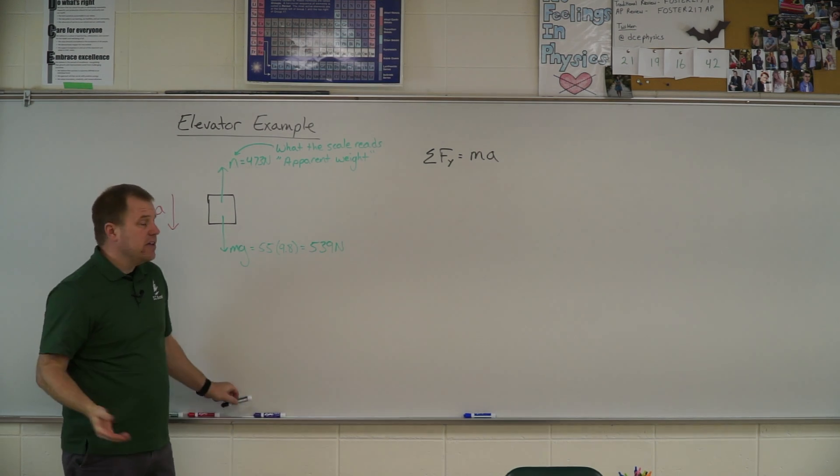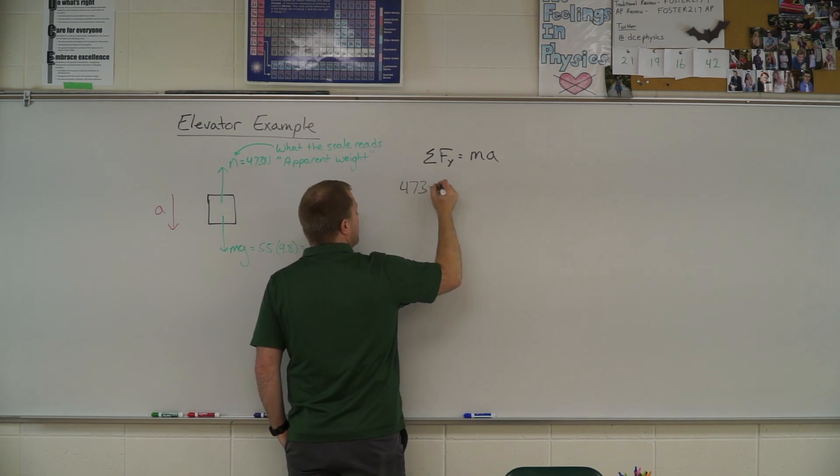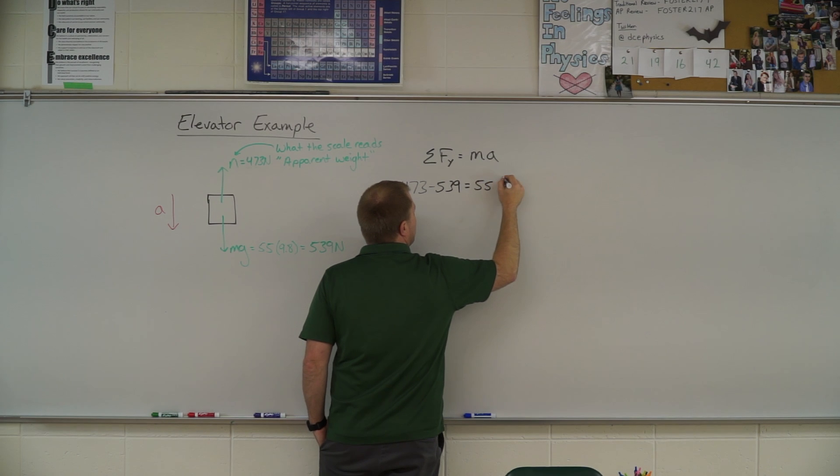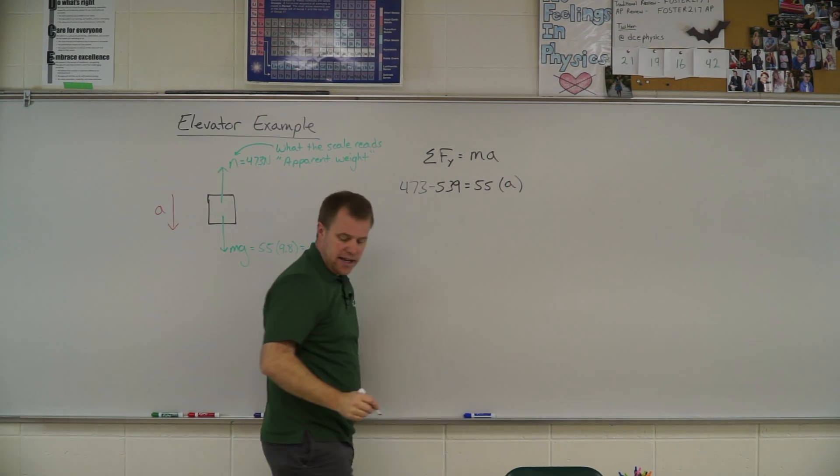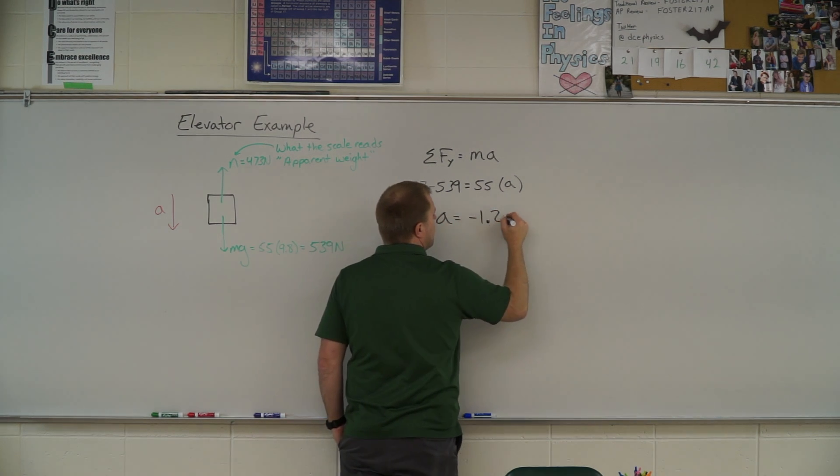Now I can calculate that number here. I can say, okay, I have 473 up minus 539 down equals 55 times a and I can go ahead and solve for a and I find out that the acceleration is negative 1.2 meters per second squared.